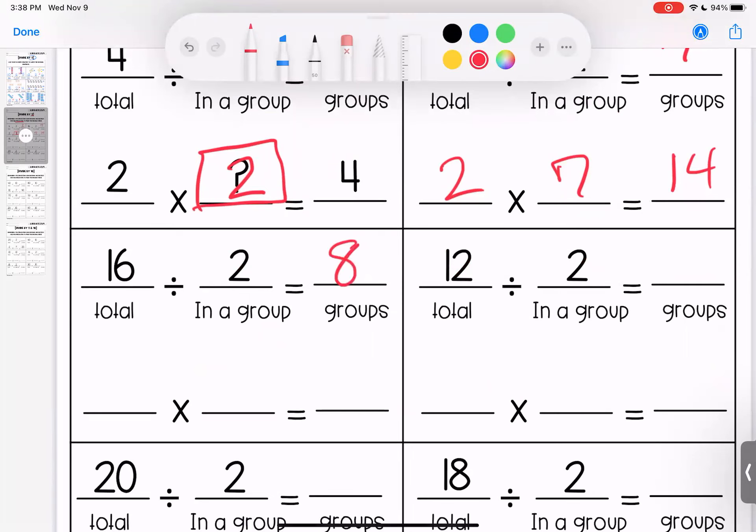Sixteen divided by two is eight and two times eight is sixteen. Twelve divided by two, maybe I don't know, but I can think of it as two times what is twelve? Twelve times six is twelve, which means that twelve divided by two is six.